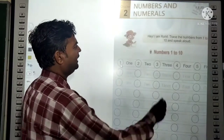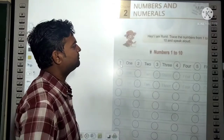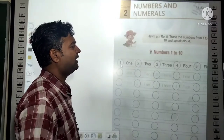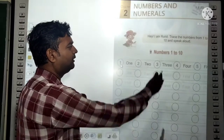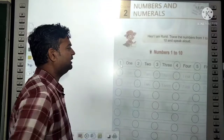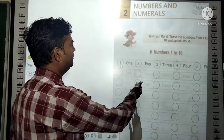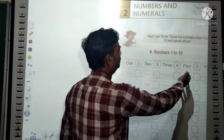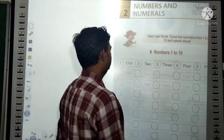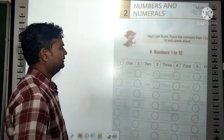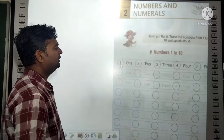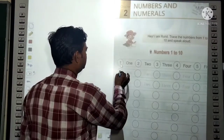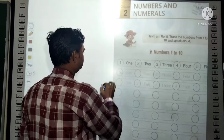Now, press the numbers from 1 to 10 and speak aloud. Here the numbers 1 to 10 are given. Number 1, 2, 3, 4, 5 — in the same way you can write 6.